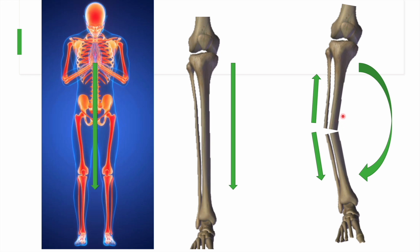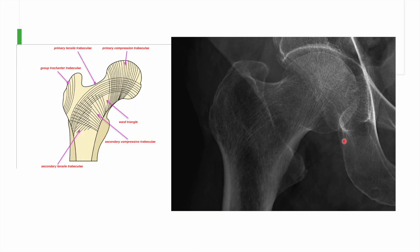For example, in the tibia, whenever there is angulation — usually in the varus direction — the medial side is in compression while the lateral side is in distraction. Again, one is the tension side and the other is the compression side.